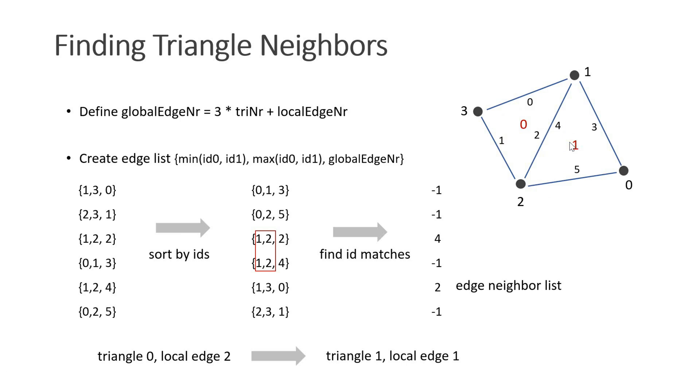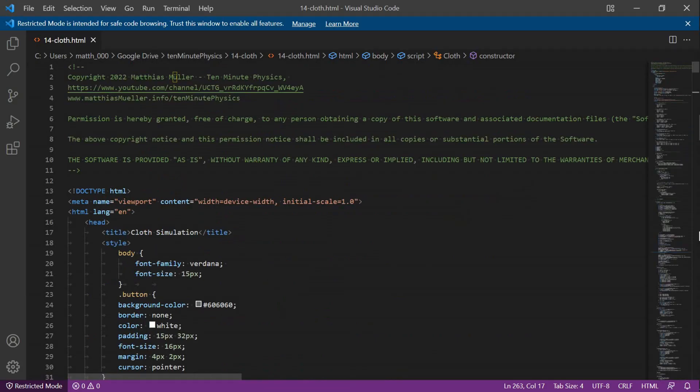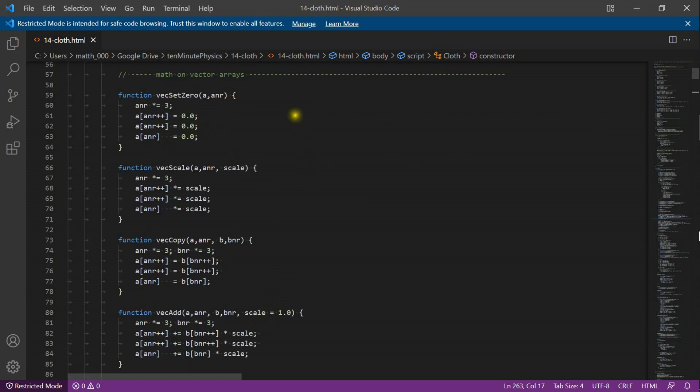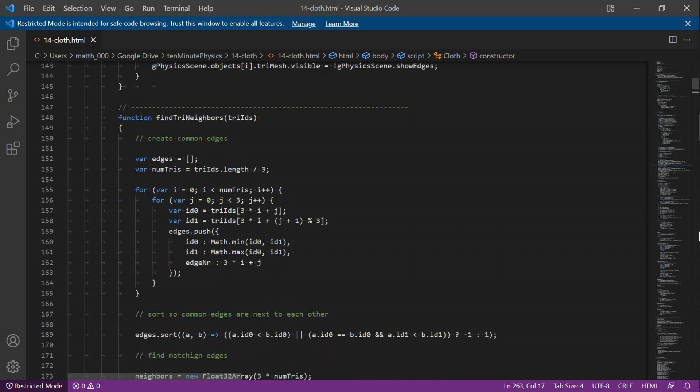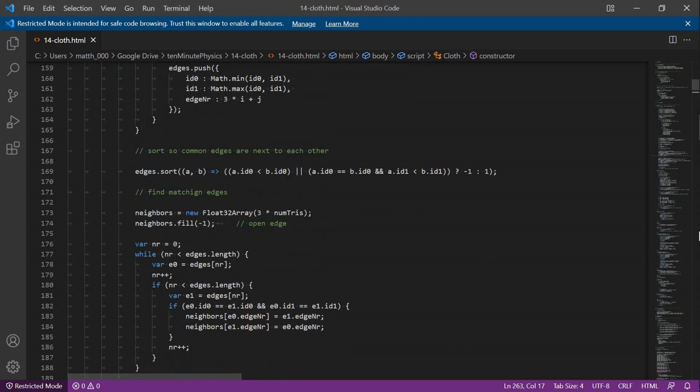Now let's have a look at the code. I took the code mostly from the soft body example. These are the fast vector functions that operate directly on float32 arrays. The function findTriangleNeighbors is the implementation of the method that I just explained. First I run through all the triangles and all their edges and create the edge list. Next the edge list is sorted.